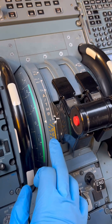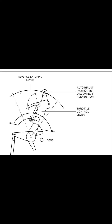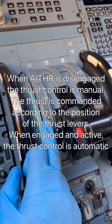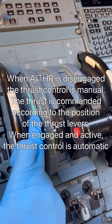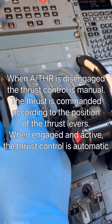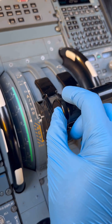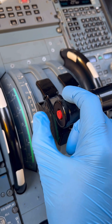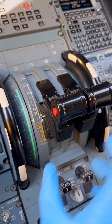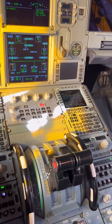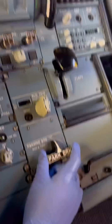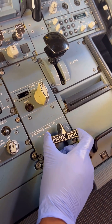There's also a red button on the thrust lever. It's called the auto thrust instinctive disconnect push button. In any phase of flight, if the crew feels they need to disconnect auto thrust, they press that button and the throttle levers go into manual mode. In manual mode, they operate like any thrust lever — as you move the thrust lever forward, thrust gradually increases.